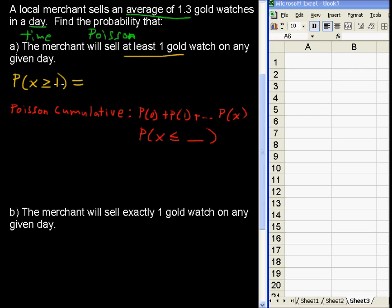The probability that x is greater than or equal to 1 equals 1 minus the complement of that. And the complement of x being greater than or equal to 1 is x being less than 1, which is x less than or equal to 0. This is what we're going to type into Excel.